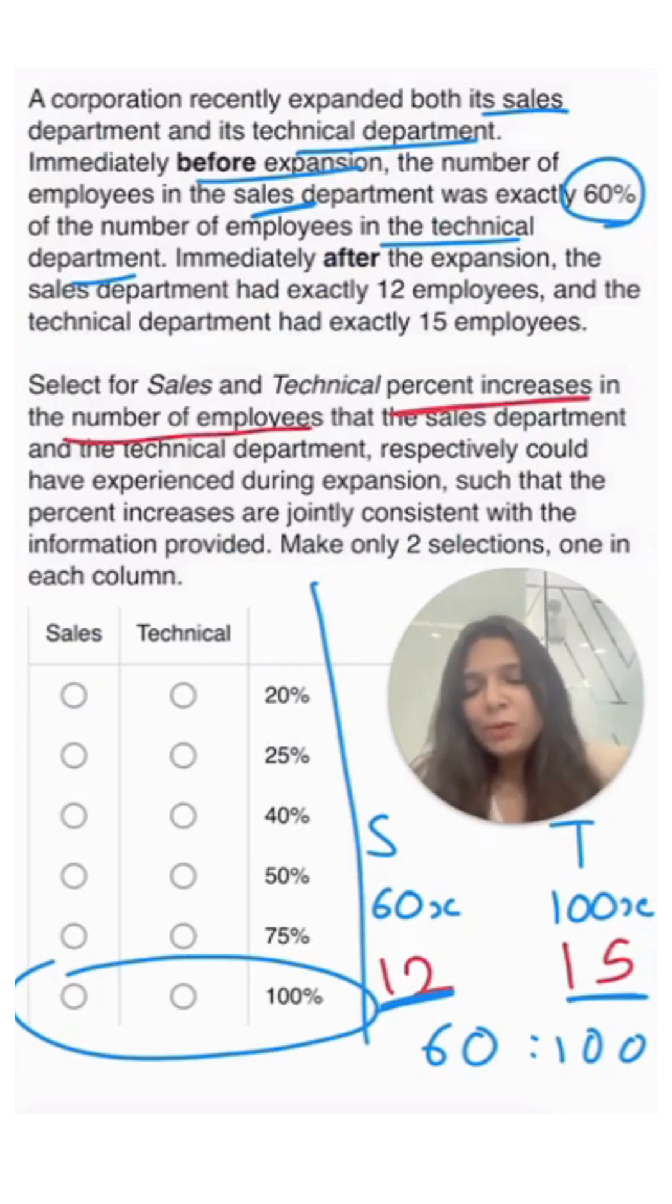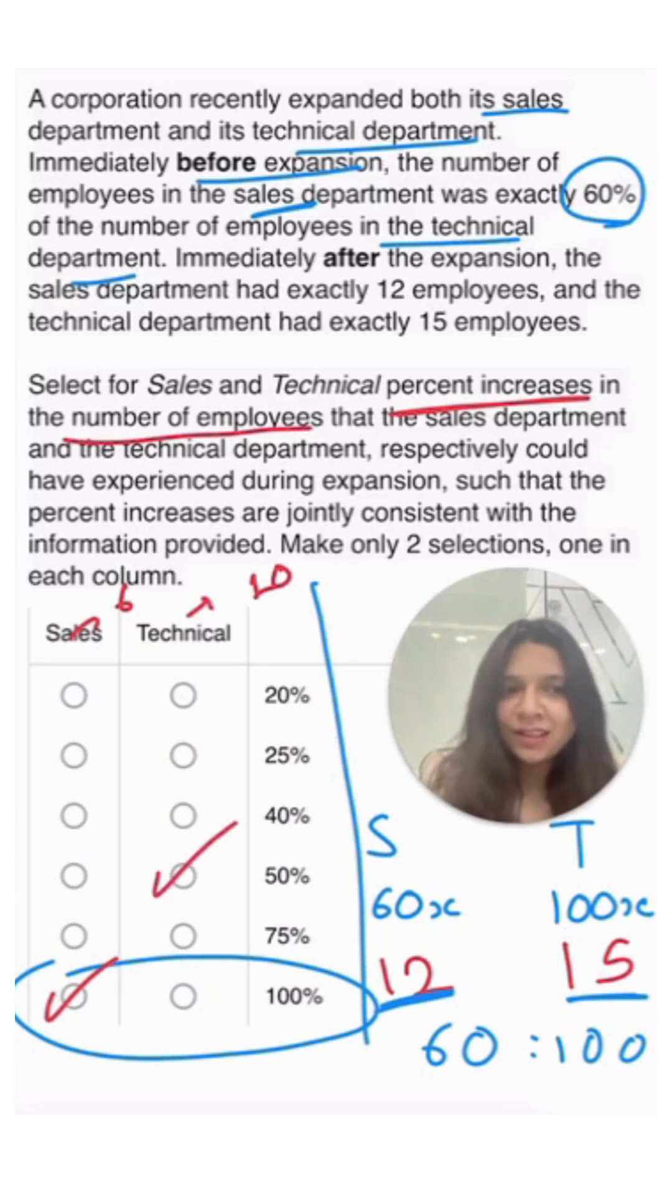So the only option we have is that there were 6 sales employees and 10 technical employees. So 6 to 12, there was a 100% increase in sales employees. And from 10 to 15, there was a 50% increase in technical employees.